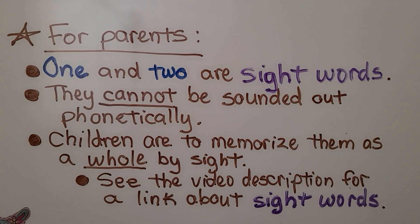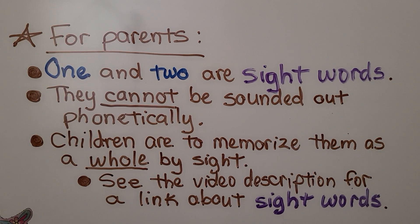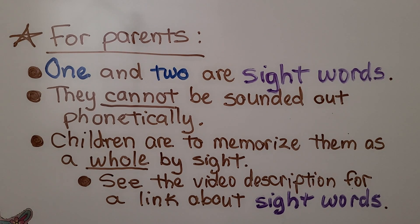A message for parents: one and two are sight words. They cannot be sounded out phonetically. Children are to memorize them as a whole word by sight. You can see this video's description for a link about sight words.